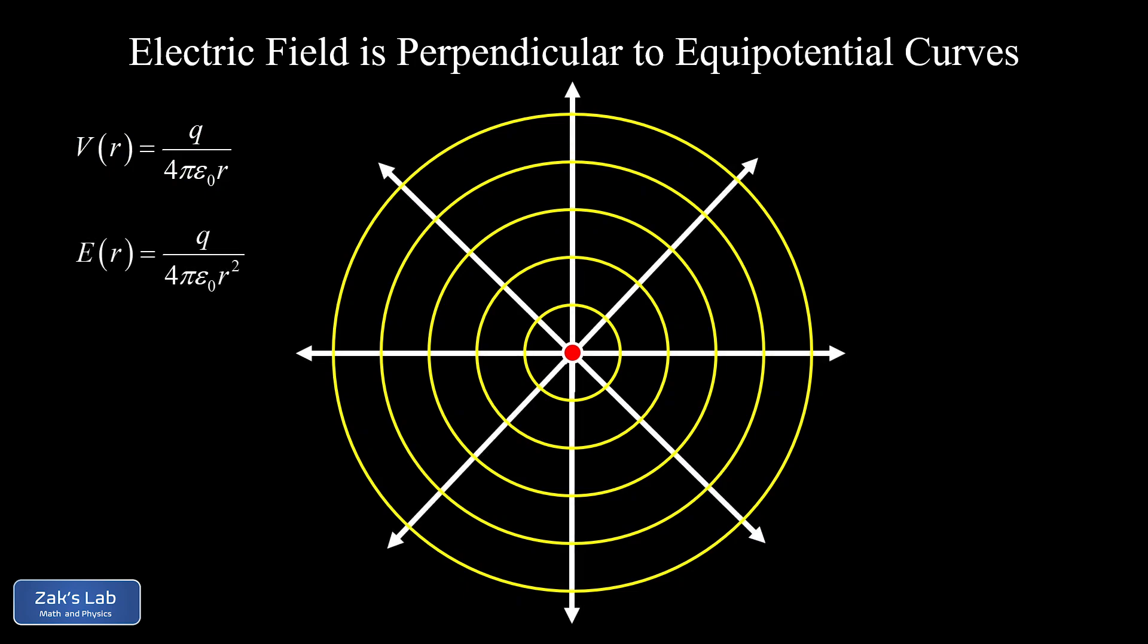And of course, we're also familiar with the electric field surrounding a positive point charge. The magnitude is given there by Q over 4 pi epsilon 0 R squared. But the main point here is that the electric field lines are emanating radially from that point charge, making them perpendicular to the equipotential curves at every intersection.